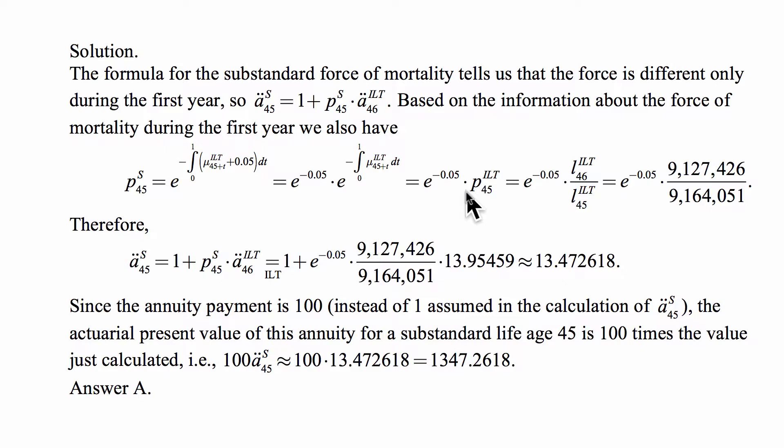Based on the information about the force of mortality, we can calculate that probability of survival as e to the minus integral from 0 to 1 of the force of mortality, which is the illustrative life table force of mortality plus 0.05. That plus 0.05 is a constant, so using the integral of a sum equals the sum of integrals, the integral of 0.05 from 0 to 1 is just 0.05.